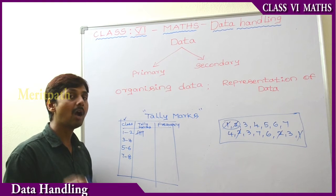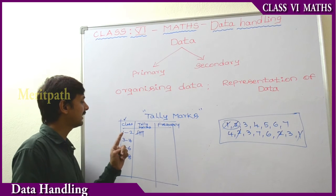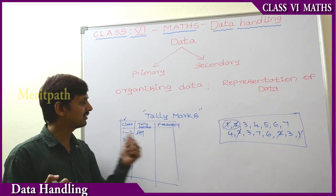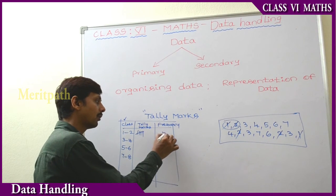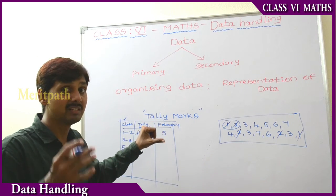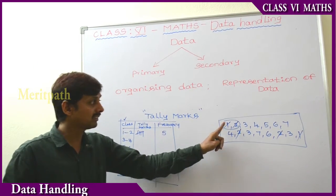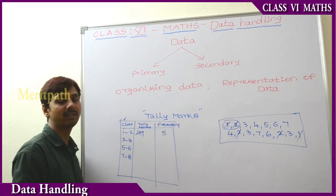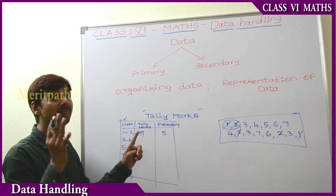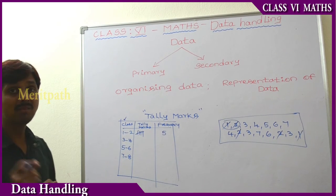To understand easily and count easily, we use tally marks at the starting stage. Frequency is nothing but how many times a value in the class 1 to 2 is repeated — how many number of values are present in that group. So let's count: 1, 2, 3, 4, 5. There are 5 observations, 5 numbers present between 1 and 2. That count — how many times it is repeated — is called frequency. So the frequency for 1 to 2 is 5, because 5 values are present.